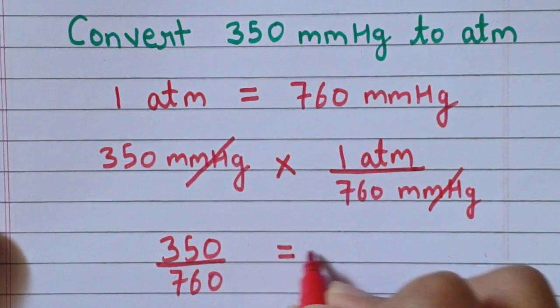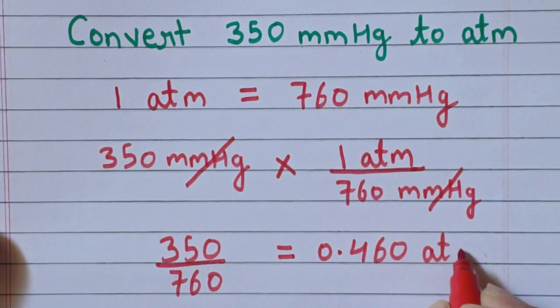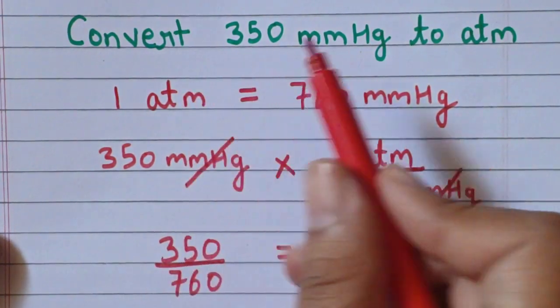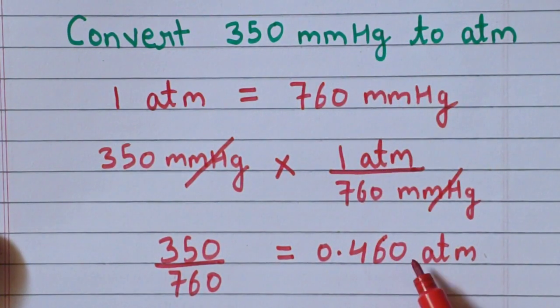So the answer will be 0.460 atmosphere. So 350 millimeter of mercury is equal to 0.460 atmosphere.